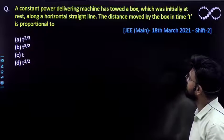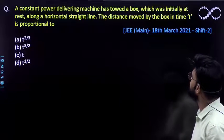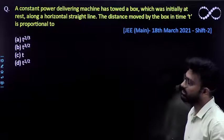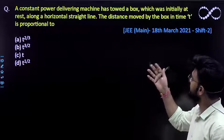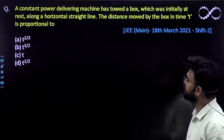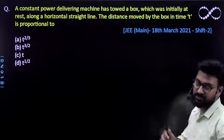A constant power delivering machine has towed a box which was initially at rest. So that means some machine is doing work, and constantly working on a certain box which is initially at rest along a horizontal straight line.